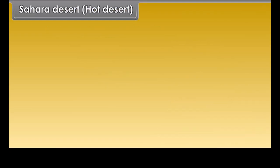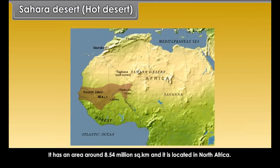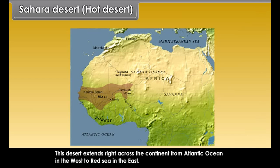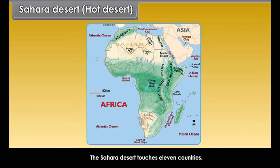Sahara Desert — Hot Desert. Sahara is the largest desert of the world. It has an area of around 8.54 million square kilometers and is located in North Africa. This desert extends right across the continent from the Atlantic Ocean in the west to the Red Sea in the east. The Sahara Desert touches 11 countries.